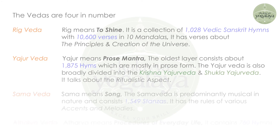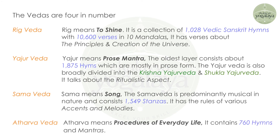The four Vedas, the four Upavedas, six Vedangas, and six Upangas or Darshanas constitute the Shruti, whereas the Puranas, Itihasas, and Agamas constitute the Smriti. The Vedas are four in number.